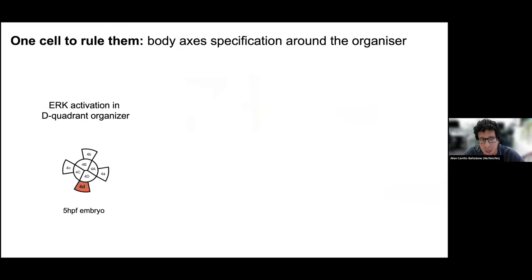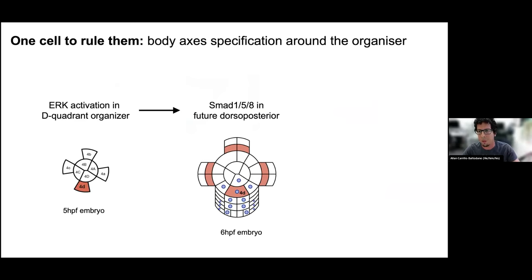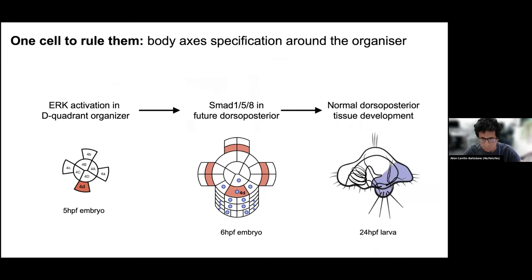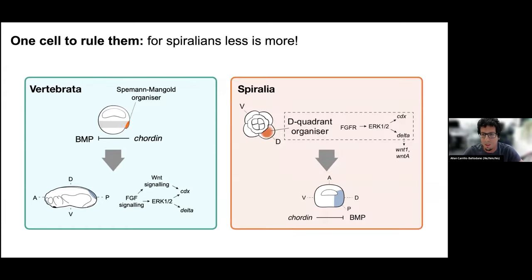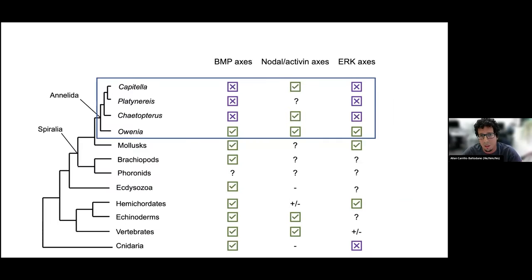We are now creating a model for our system that we can try to extrapolate to other annelids, where a cell activated by MAP kinase can act as an organizer. Then ERK tells BMP: I did my role, now it's your turn to set up and finish establishing the dorsal posterior tissue of the embryo and eventually of the larva. A lot of these pathway names are familiar and conserved across many species. What is interesting for spiralians is that everything seems to be compacted into a cell and its immediate neighbors — a strategy that has been working for more than 500 million years. Hopefully this shows that annelids are not so unusual, and that they can also use MAP kinase and BMP as other bilaterians do.